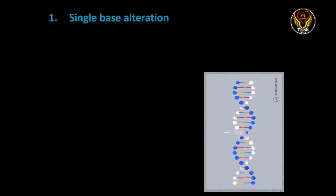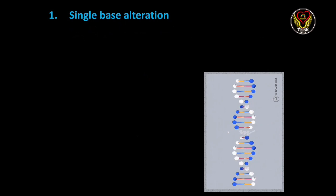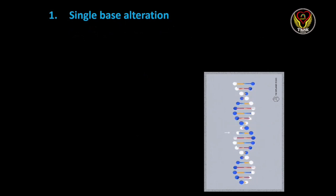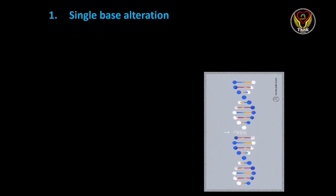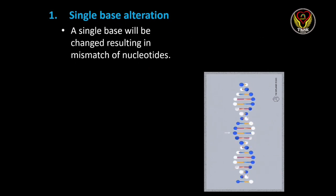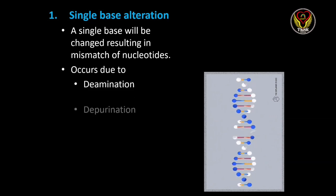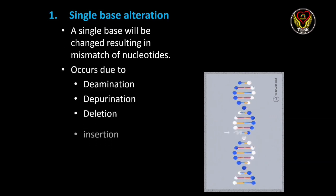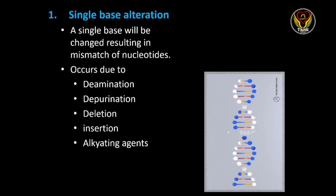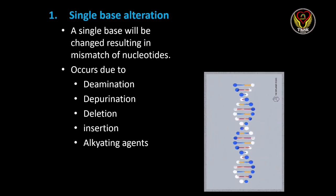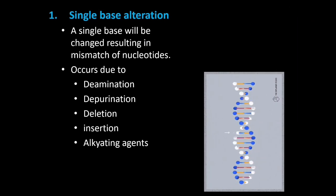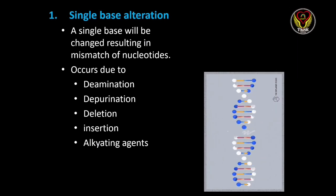Now let's look deeper into the first type of DNA damage — single base alteration. We know that in DNA, A pairs with T and G pairs with C, but sometimes due to endogenous or exogenous factors this base pairing may alter, which causes T to pair with G or C, or vice versa. There are many reasons for these alterations, including deamination and depurination.